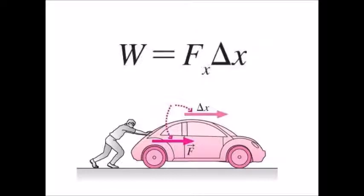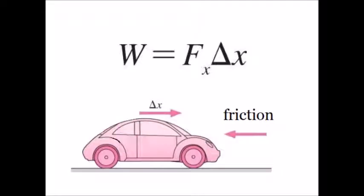Then you stop, the car drifts, and friction causes it to come to a stop. Friction is the new force — friction is doing work on the car and changing its kinetic energy. Notice the direction of friction: direction matters. Friction is in the negative X direction, so friction is doing negative work on the car, decreasing the car's kinetic energy.